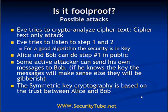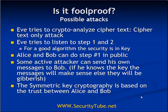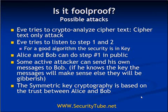Symmetric key cryptography is based on the trust between Alice and Bob. If Alice breaks that trust and gives the key to someone else, Bob cannot do anything — that third party can send messages to Bob and Bob cannot determine whether the message is coming from Alice or the third party. The main problem is that the same key is shared between Alice and Bob, so a compromise in the key can be easily exploited by an attacker.